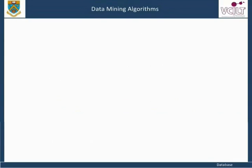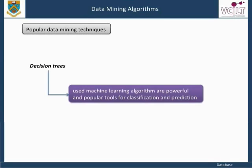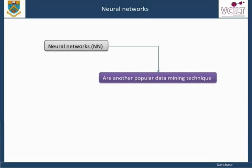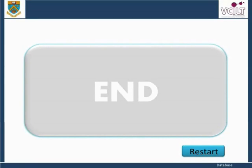Popular data mining techniques include Decision Trees — a series of if-or-then rules, a commonly used machine learning algorithm that is powerful and popular for classification and prediction. Neural Networks are another popular data mining technique. An Artificial Neural Network, ANN, is a system of software programs and data structures that approximates the operation of the brain.